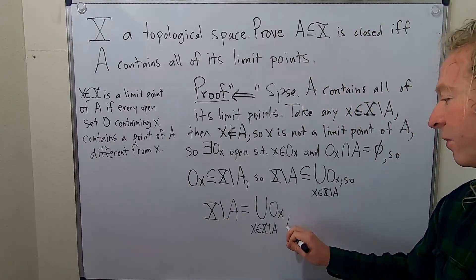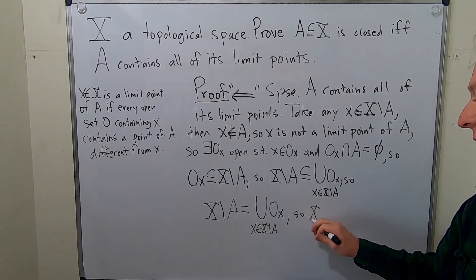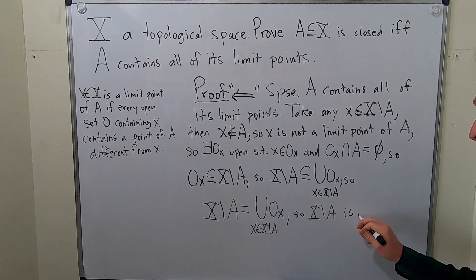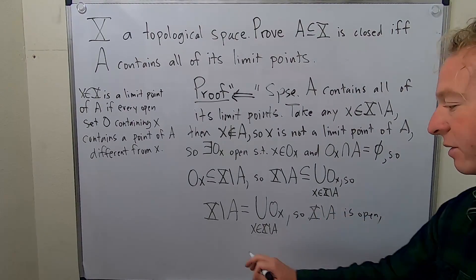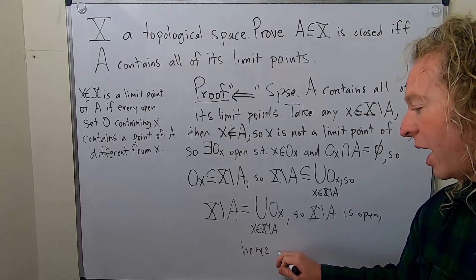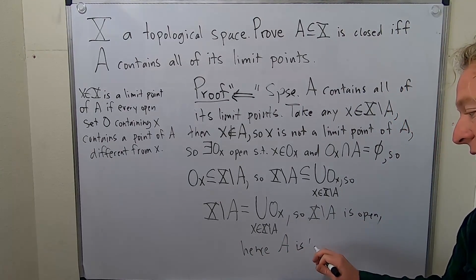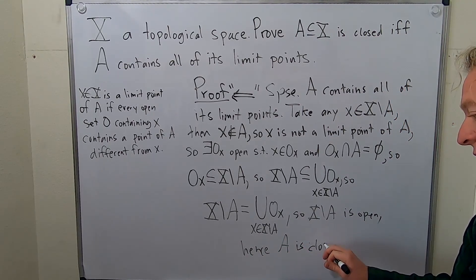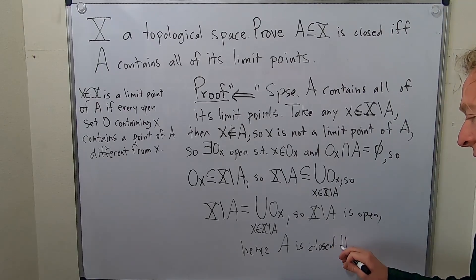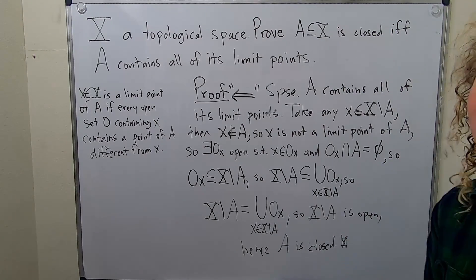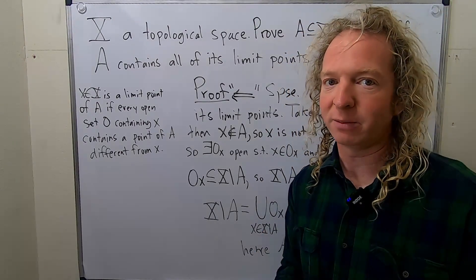Therefore, X set minus A is open. Hence, A is closed — that's the definition of closed. So we've completed the proof. I hope this video has been helpful. Take care.